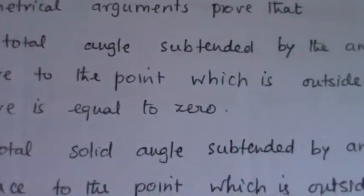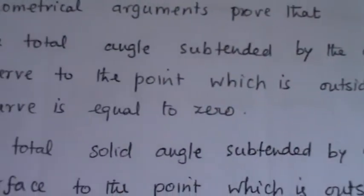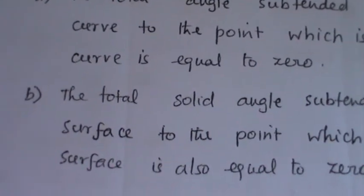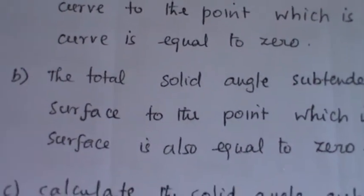Now, the total solid angle subtended by a closed surface to any point which is outside the closed surface is also zero.